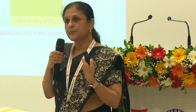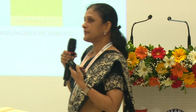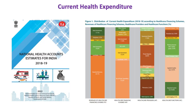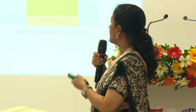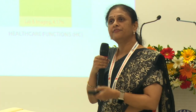The government is spending a lot on these schemes. The latest National Health Account estimates for India 2018-19 show how finances from the central government, state government, and other stakeholders have contributed to running these schemes. The private sector is also enrolled through public-private partnerships, working hand-in-hand and really benefiting communities.